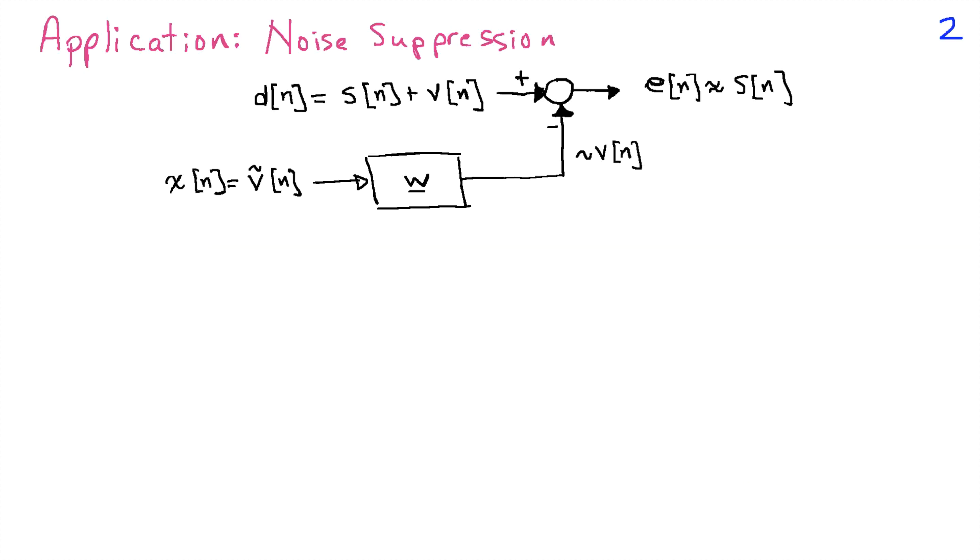So let's look at a couple applications of this idea. And then in later lectures, we'll look at how to choose w to solve these minimum mean squared error problems. So the first application that I want to look at is a noise suppression application.